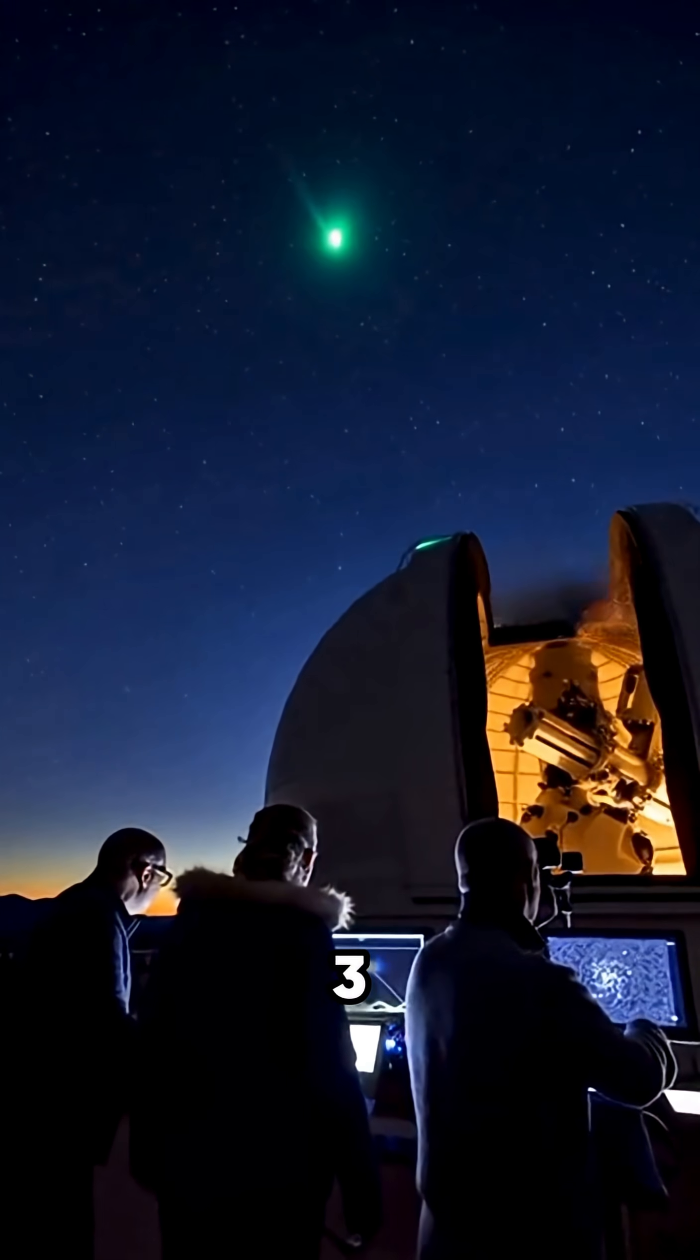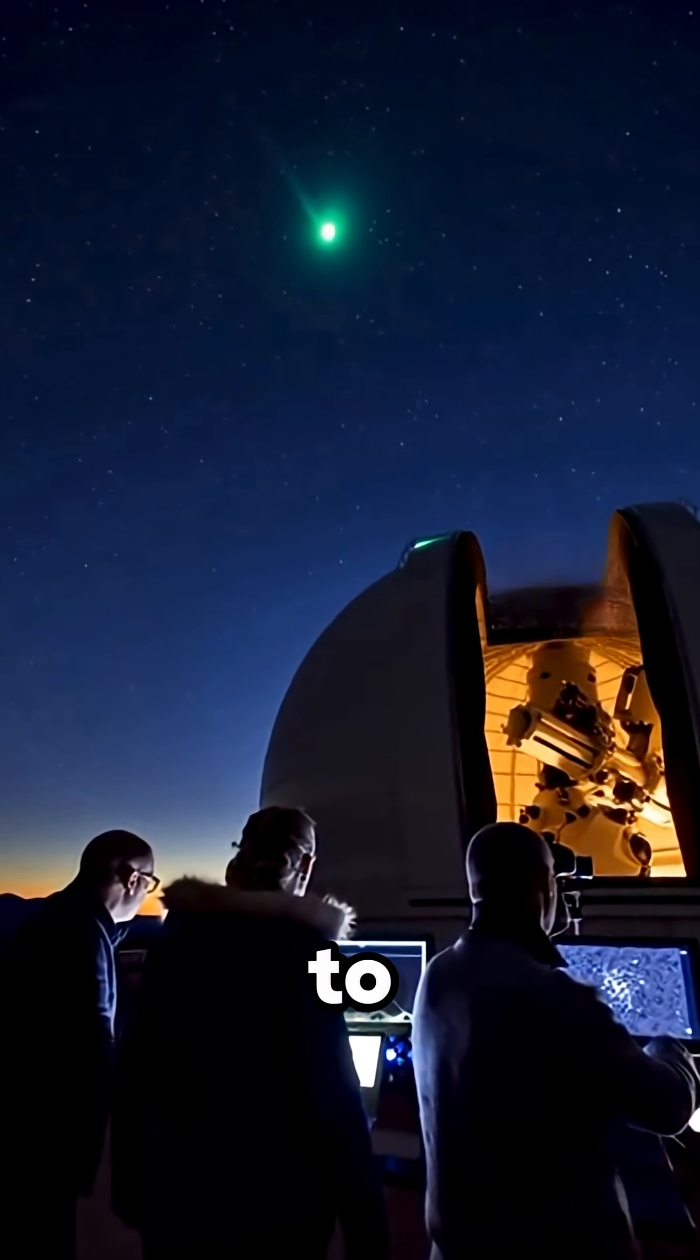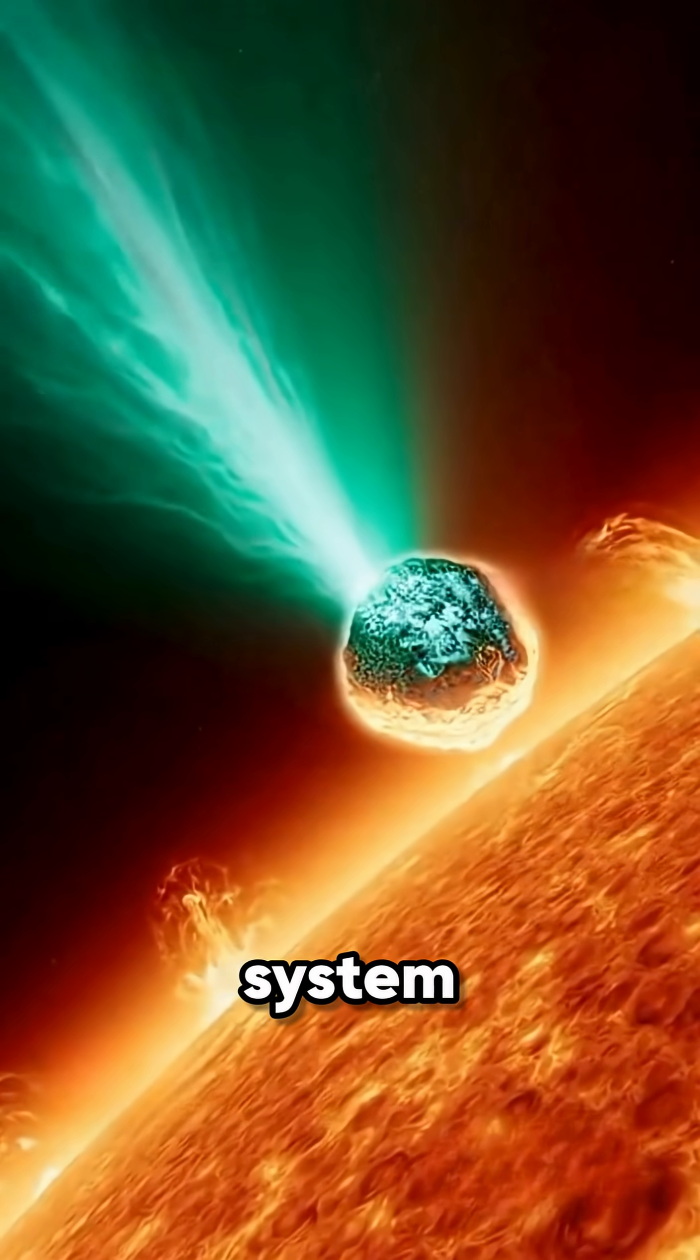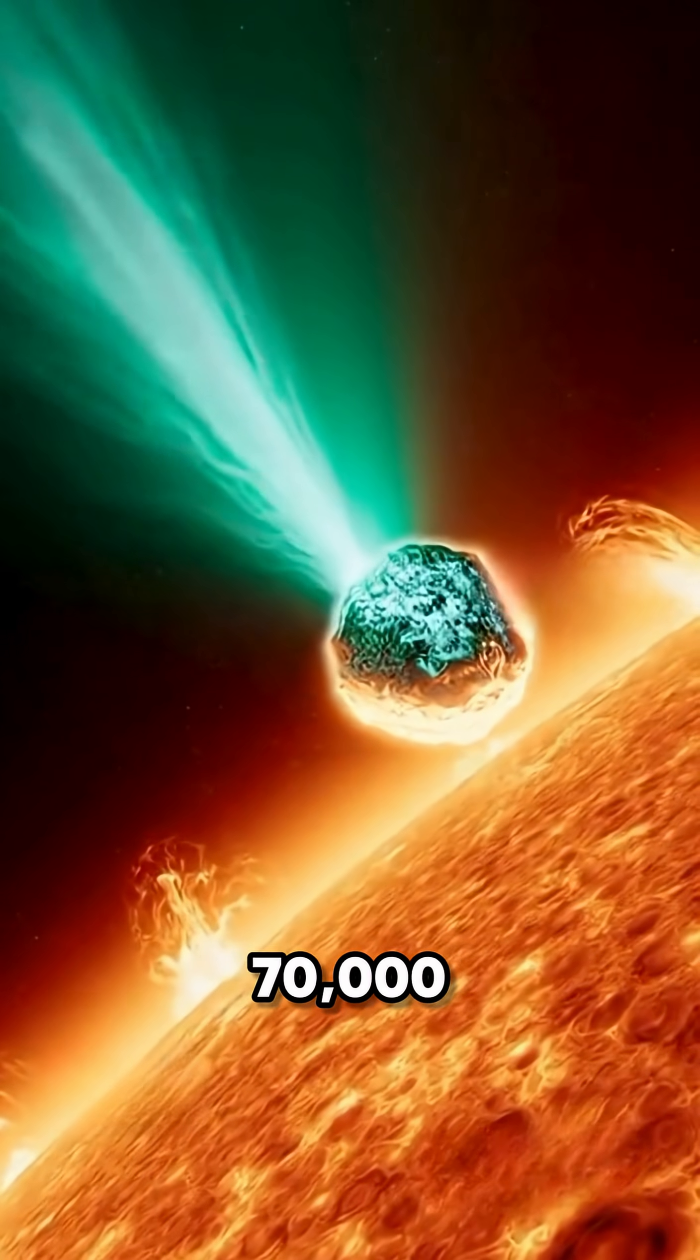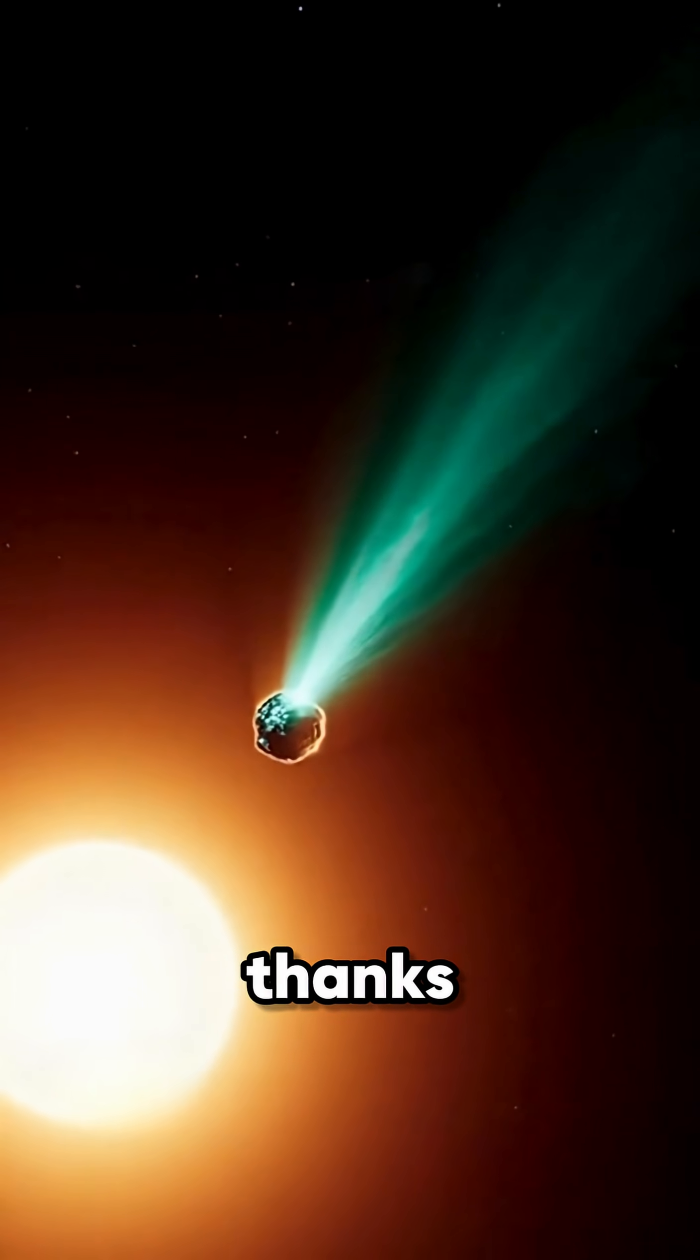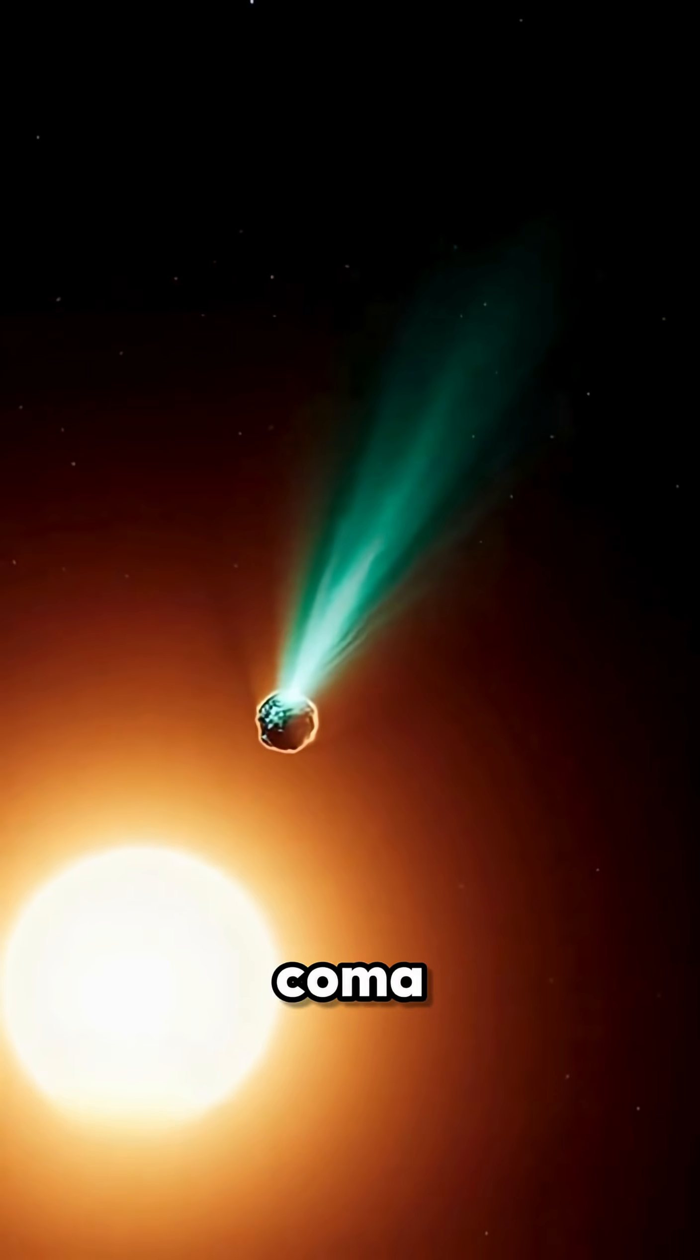Here's something wild. 3i Atlas is estimated to be over 3 to 11 billion years old, older than our entire solar system. It's currently moving at nearly 70,000 miles per hour, and when sunlight hits it, the comet glows green, thanks to diatomic carbon gas in its coma.